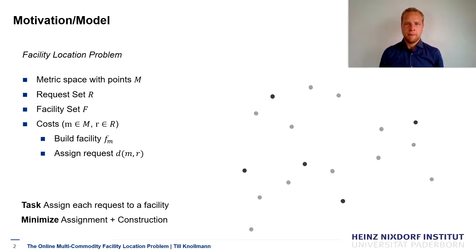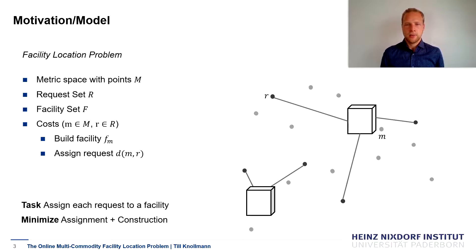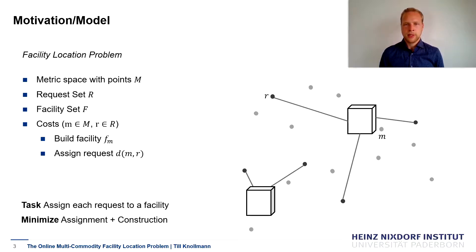We are given a metric space with a point set M — those are the dots in the figure — and we are given a request set R of requests located at the metric space points, shown as the darker dots. An algorithm has to define a set of facilities placed at points of the metric space and assign each request to a facility. Every time we construct a facility at a point M, we pay a price F_M. Every time we connect a request R to a facility at M, we pay a price equal to the distance between M and R in the metric space as an assignment cost. The overall goal is to minimize the total assignment and construction cost.